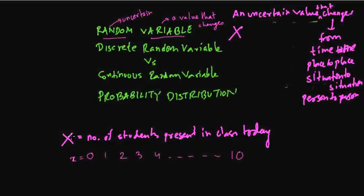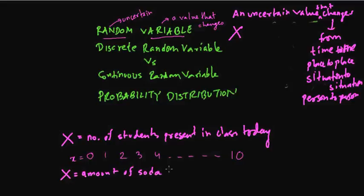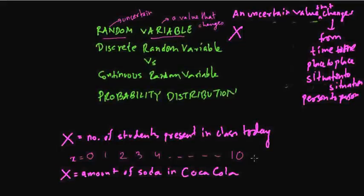Another example of a random variable is the amount of soda in a Coca-Cola drink. It is usually 250 ml for a small bottle, but sometimes it can be less than 250 ml or more than 250 ml. So this can also be denoted by a random variable.